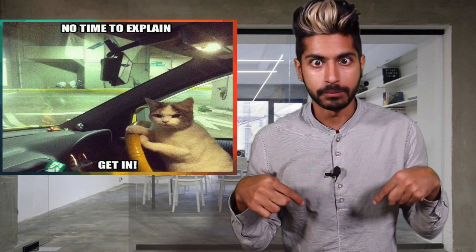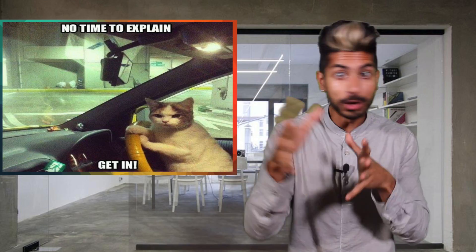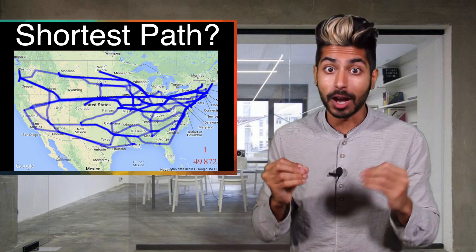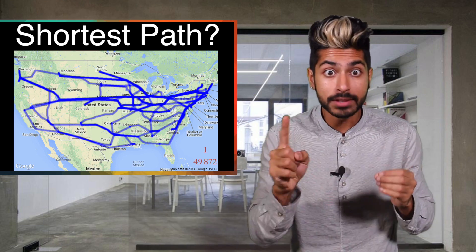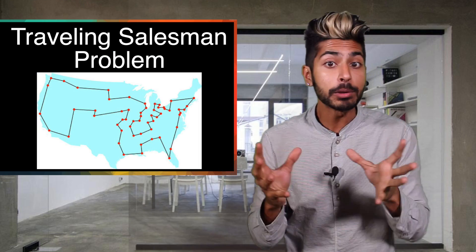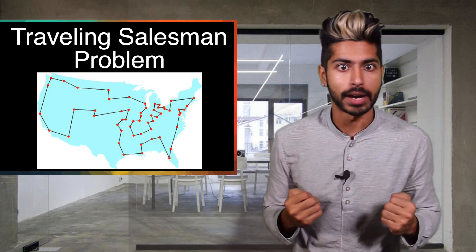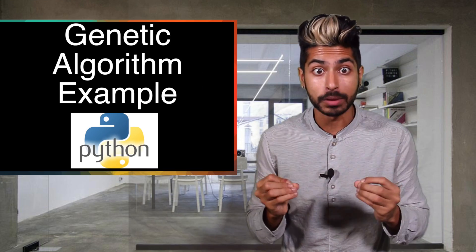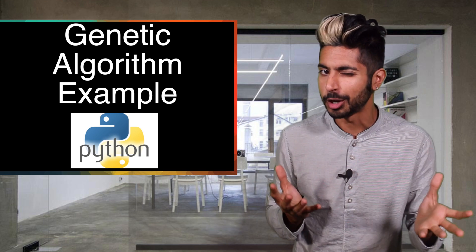Take this problem for instance. Let's say you want to take a road trip across a bunch of cities. What's the shortest possible path you could take to hit up each city once and then return back to your home city? This is popularly called the traveling salesman problem in computer science, and we can use a genetic algorithm to help us solve it. Let's look at some high-level Python code.